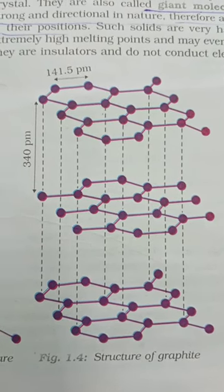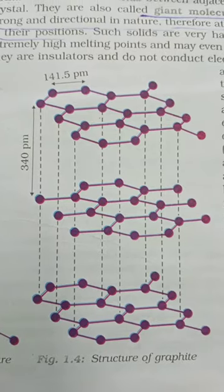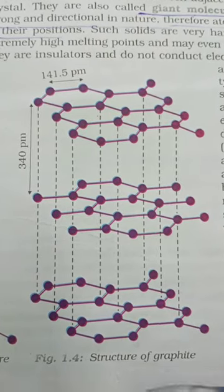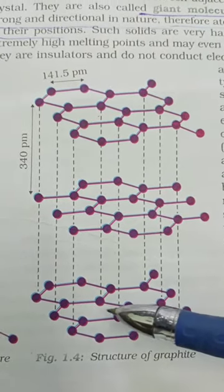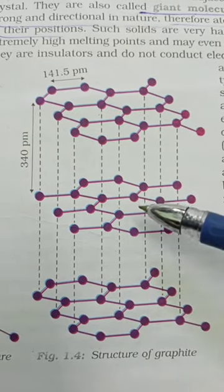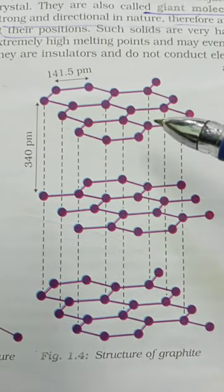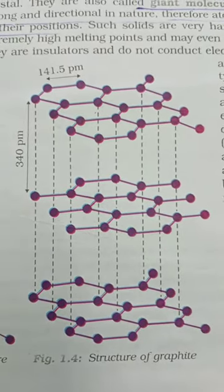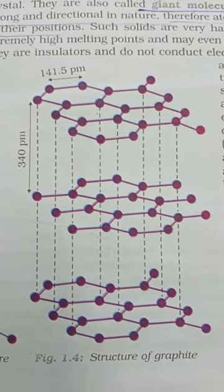Graphite acts as a good lubricant. In the structure of graphite, each layer of carbon can slide over the other one. It makes graphite a good lubricant.